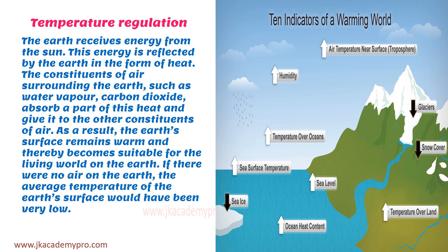As a result, the earth's surface remains warm and becomes suitable for the living world. It is warm — not very hot, not very cold — and this temperature helps living things to survive on earth. If there were no air on the earth, the average temperature of the earth's surface would have been very very low, because there would be no carbon dioxide or water vapor to absorb the heat.